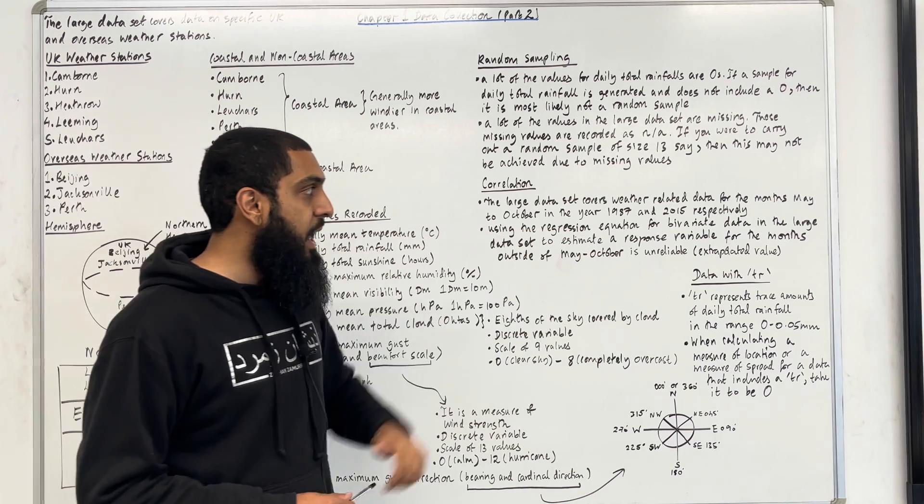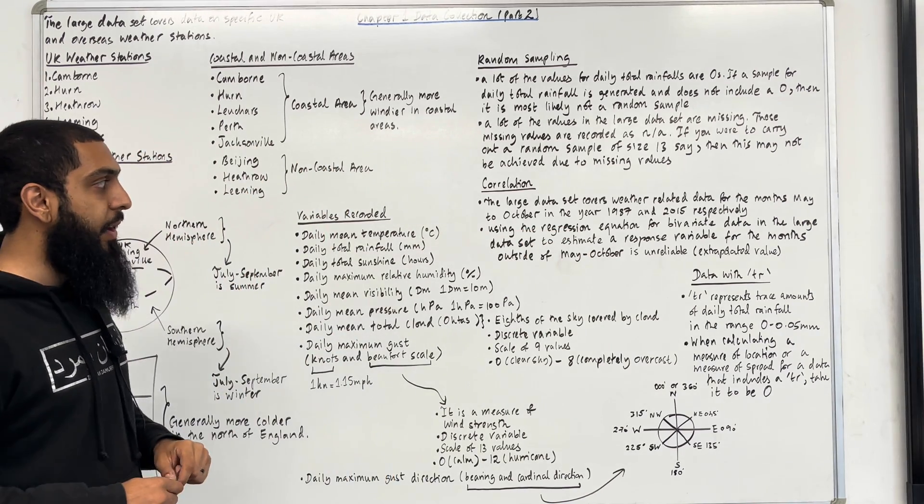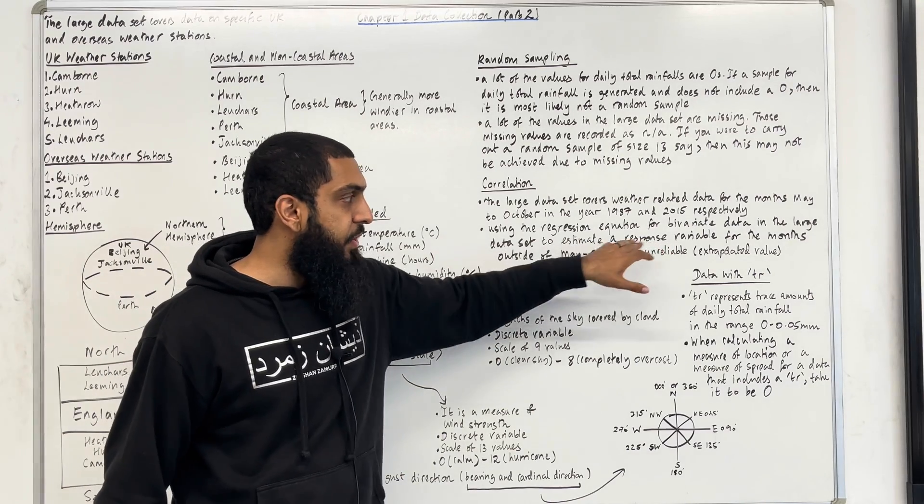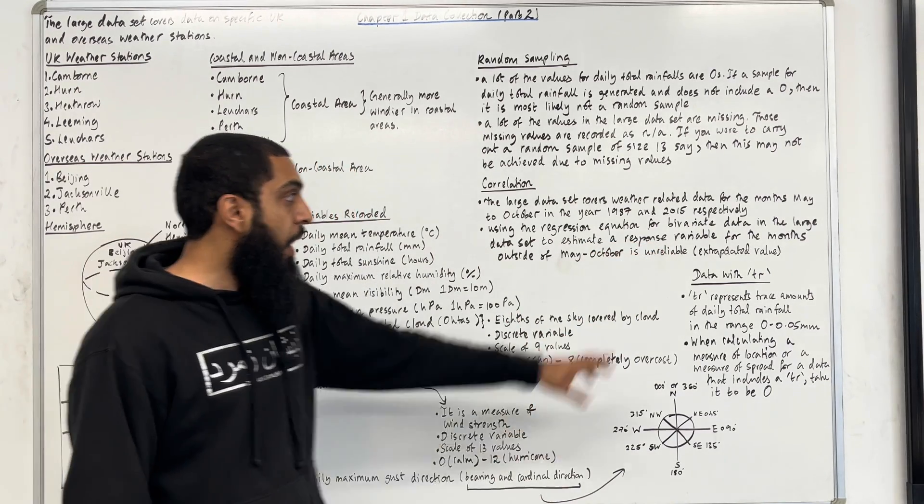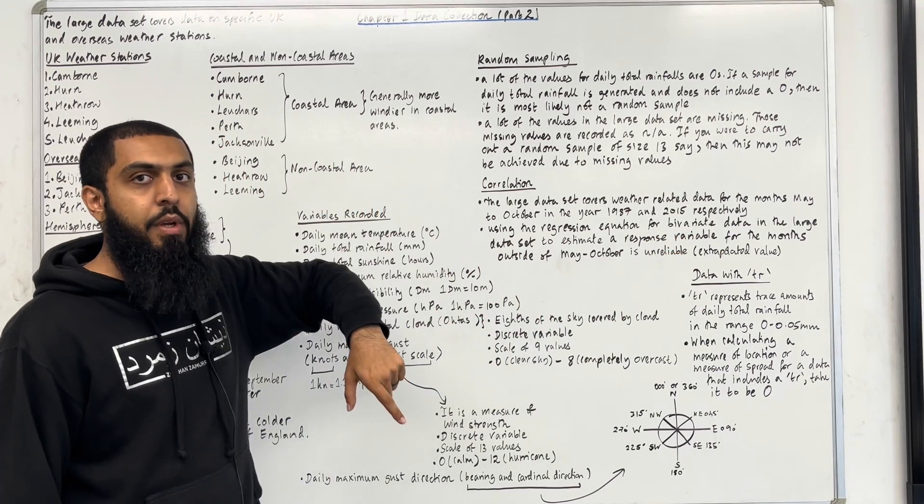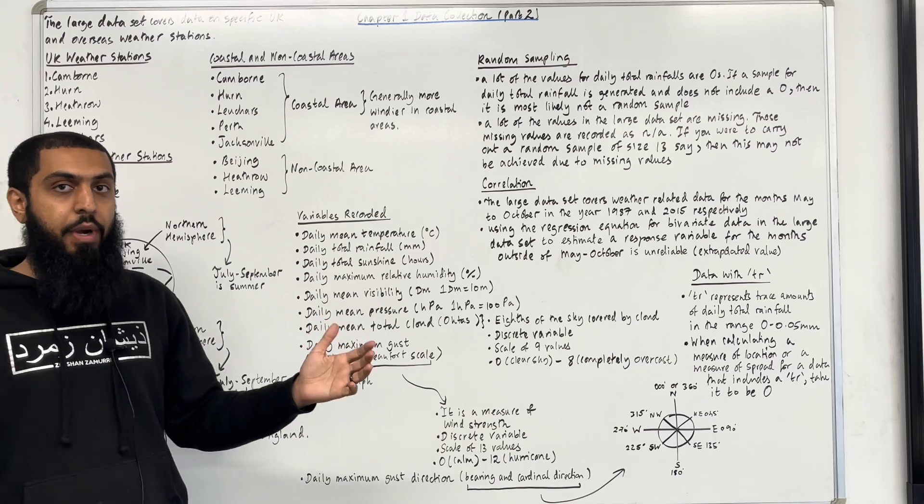Using the regression equation for bivariate data in the large data set to estimate a response variable, which is called a dependent variable, for the months outside of May to October is unreliable. This value we call an extrapolated value.